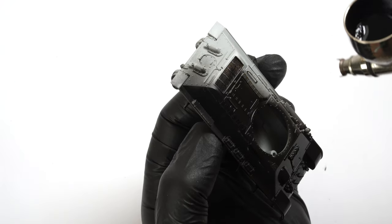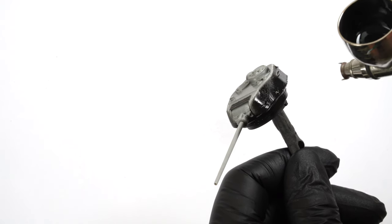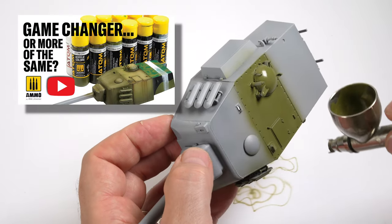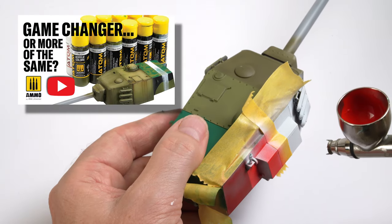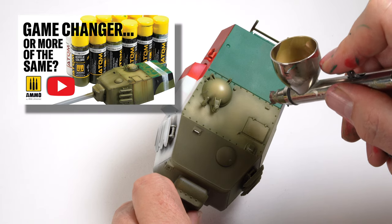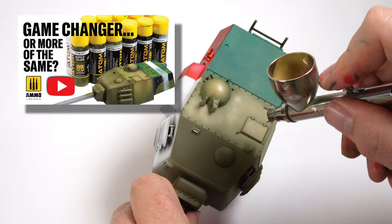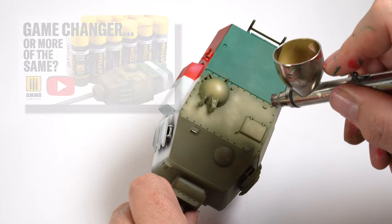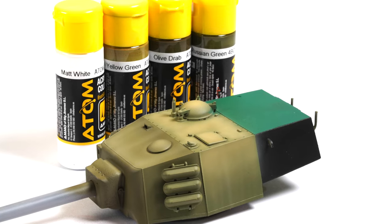The model could then be primed in the Mr. Surface black and prepared for the paint work. You may have seen a few weeks ago the review I did for the new range of Atom paints from Ammo. The tests I've done were encouraging but I wanted to put the paint to the test on an actual build and this was the perfect subject to do just that.